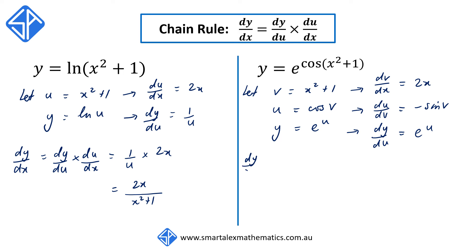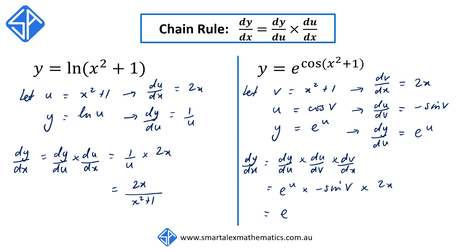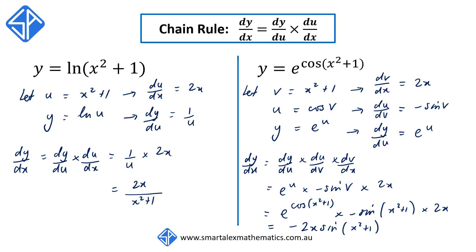We can write dy/dx as dy/du times du/dv times dv/dx. Substituting all these in, we get e to the u times negative sine v times 2x. Replacing u and v and expressing in terms of x, we get e to the power of cos(x squared plus 1) times negative sine(x squared plus 1) times 2x. This all simplifies to negative 2x sine(x squared plus 1) times e to the power of cos(x squared plus 1).